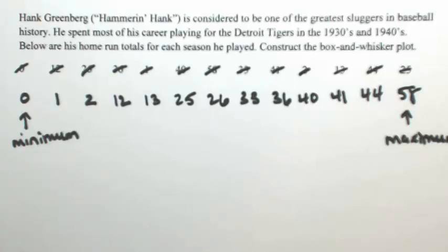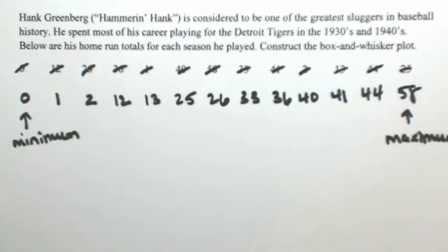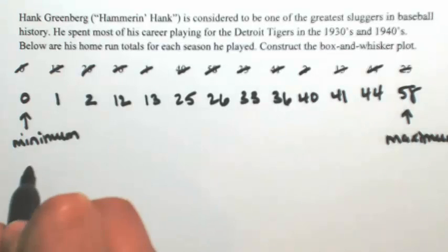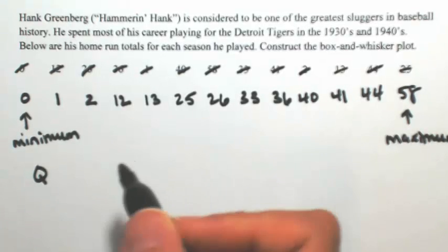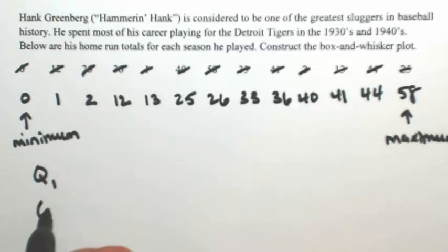So a box and whisker plot is basically going to divide up the data in quarters. So we're looking for where do we separate 25% from the top 75%, 50% from the top 50%, and then 75% from the top 25%. In other words, we're dividing it into quarters. So these are called quartiles. We're going to be looking for quartile 1, so I'm going to call that Q1, and quartile 2, and then quartile 3.